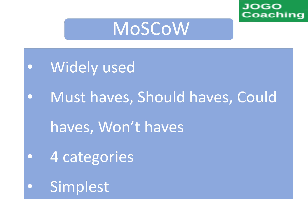MoSCoW is one of the widely used prioritization techniques in agile projects. MoSCoW stands for must-haves, should-haves, could-haves, and won't-haves. Any of these four categories will be assigned to each user story in the backlog. Must-haves will be taken as the top priority for the development. This is the simplest approach for user story prioritization.